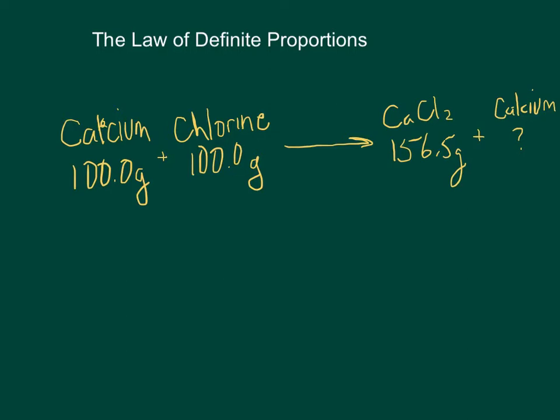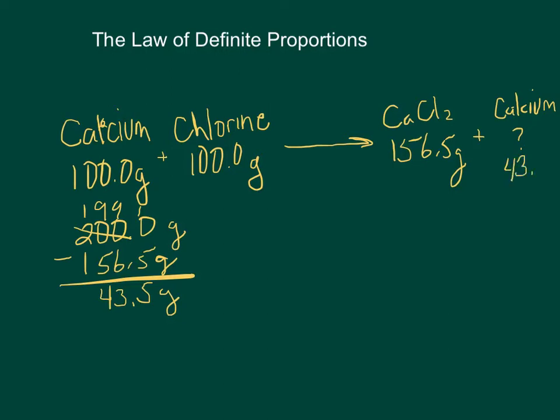So again, law of conservation of mass tells us that we can add these two and they should be the same as these two added together. So, 200.0 grams minus 156.5 grams is 43.5. So, the calcium weighs 43.5 grams. Again, we can check that to make sure by adding the reactants, adding the products, and they should equal each other.